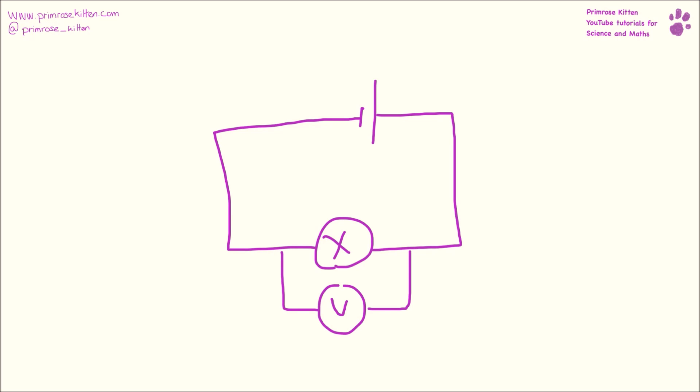So here is my series circuit. We can tell it is a series circuit because I can run my finger all the way around it. Now obviously you're going to draw your circuits with a pencil and a ruler. I've added a voltmeter to this and voltmeters have to be in parallel. They have to go across something.